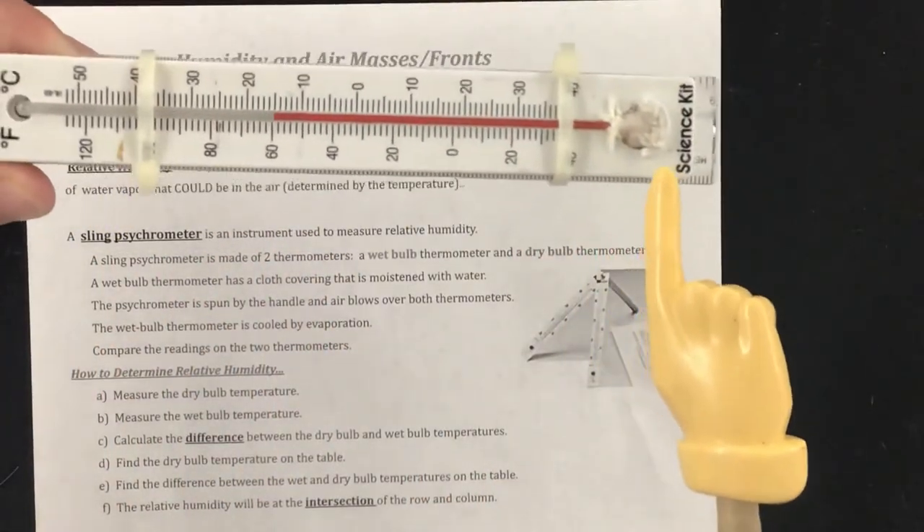You can see that this is going to be the wet bulb. It's actually a cloth surrounding the bulb of the thermometer and a dry bulb here, which is dry. There's nothing that will make it wet.